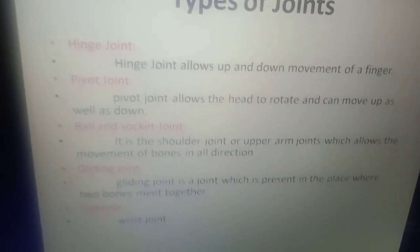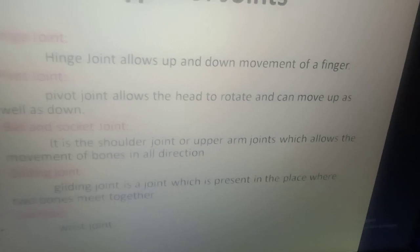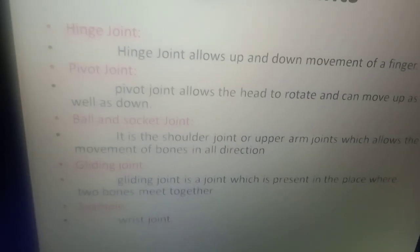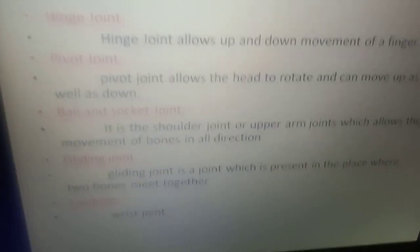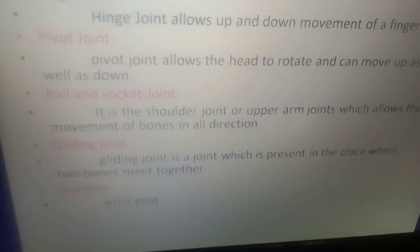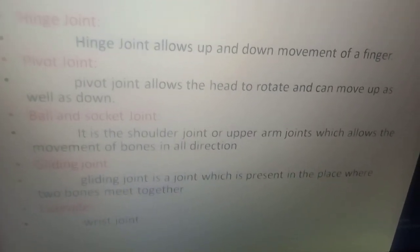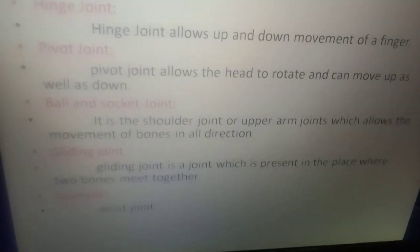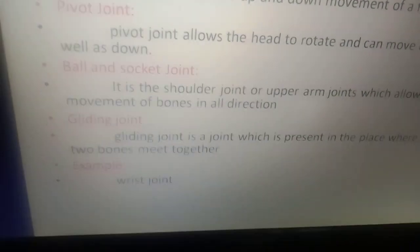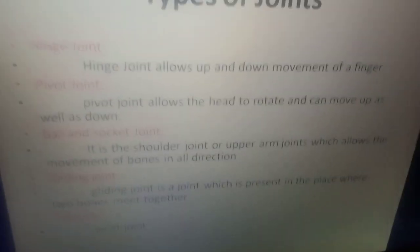Ball and socket joint is the shoulder or upper arm joint which allows movement of bones in all directions. Gliding joint is present where two bones meet together. Example: wrist joint.